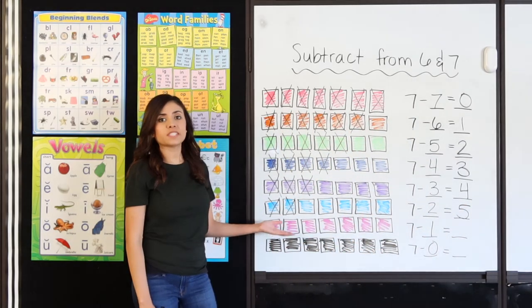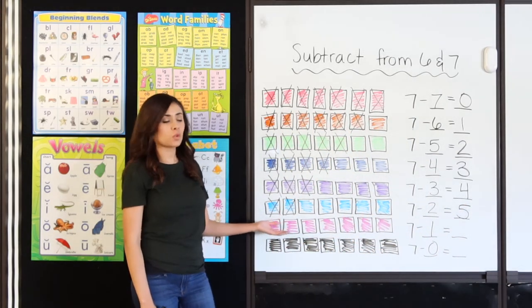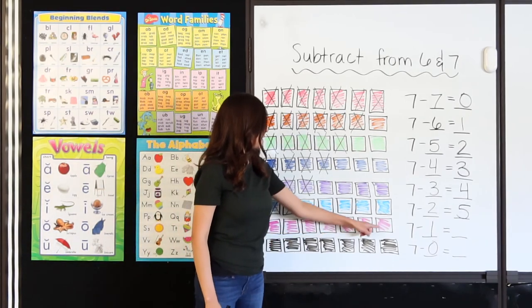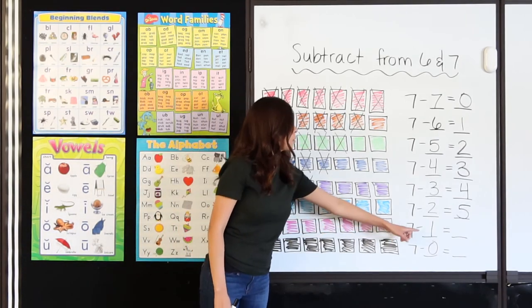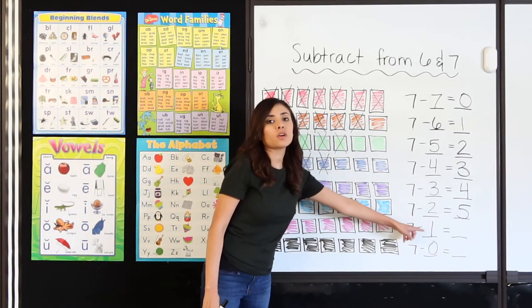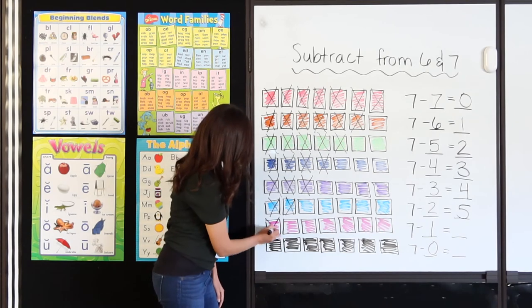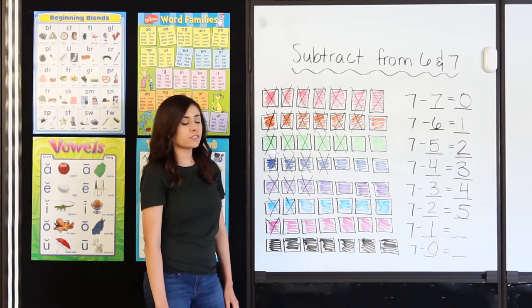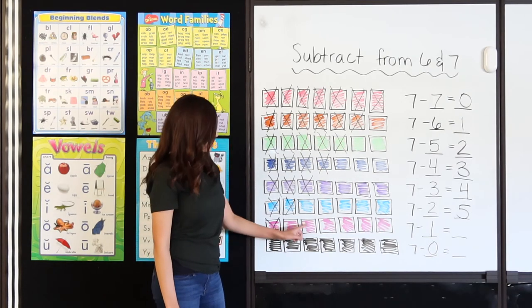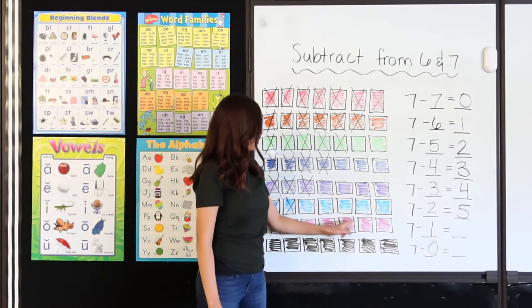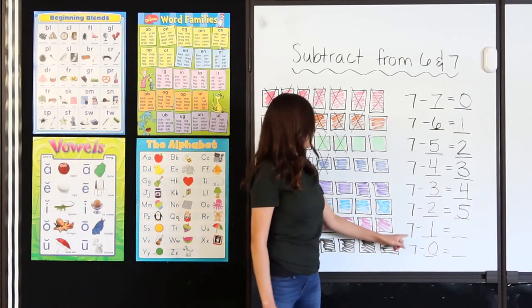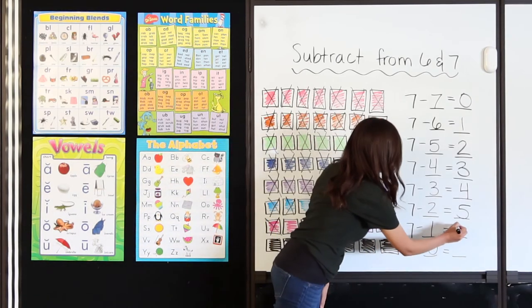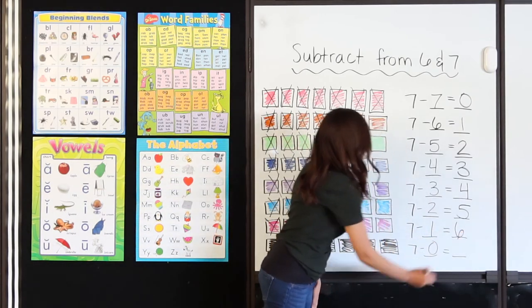I have 7 pink squares — 1, 2, 3, 4, 5, 6, 7. I'm going to take away 1. How many do I have left? 1, 2, 3, 4, 5, 6. 7 minus 1 equals 6.